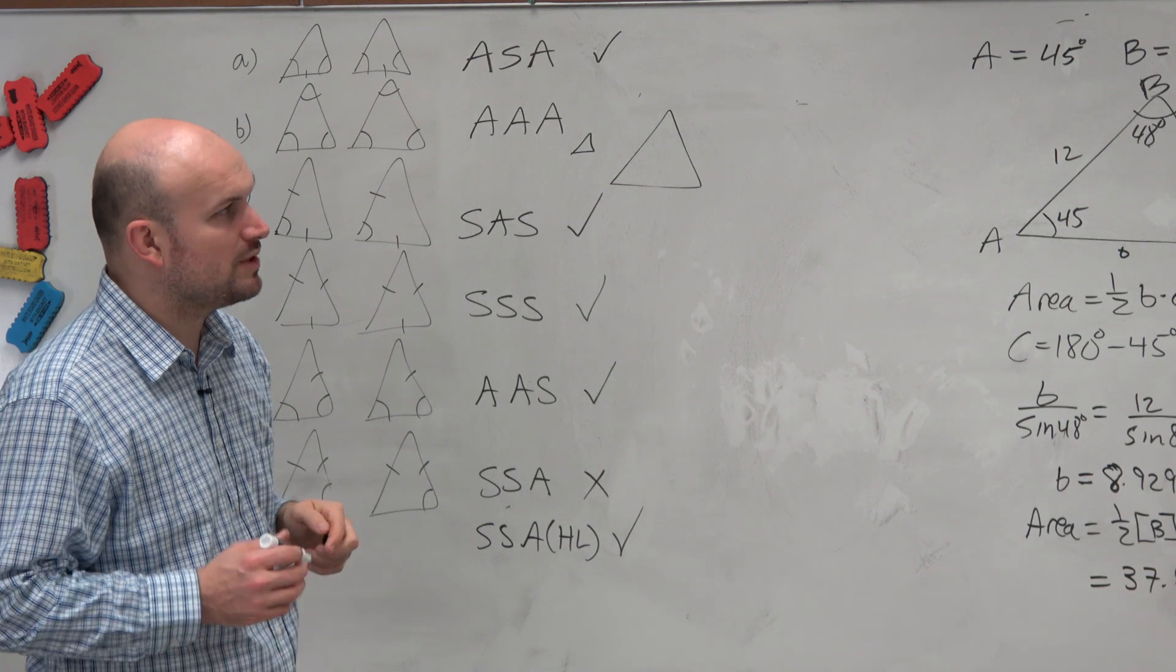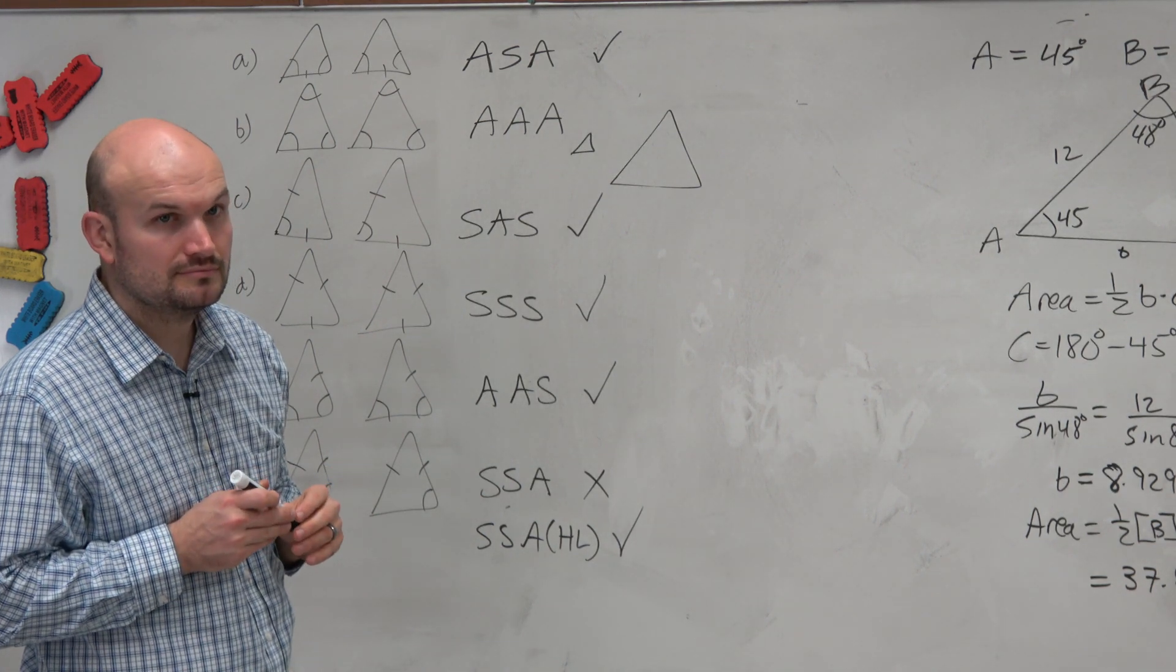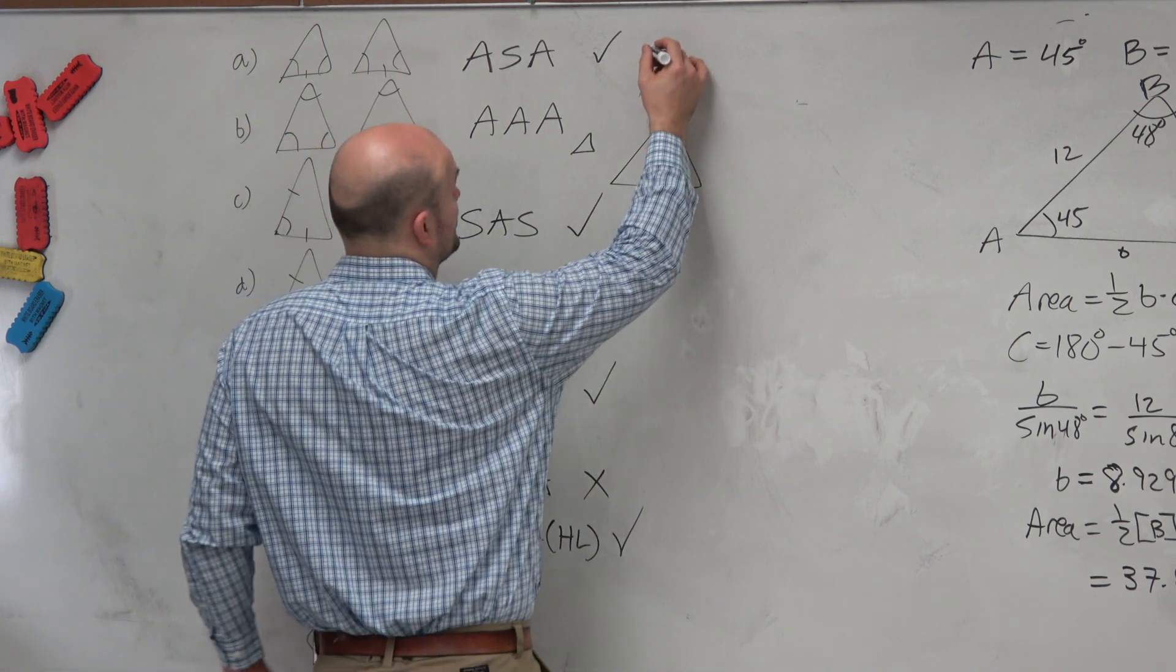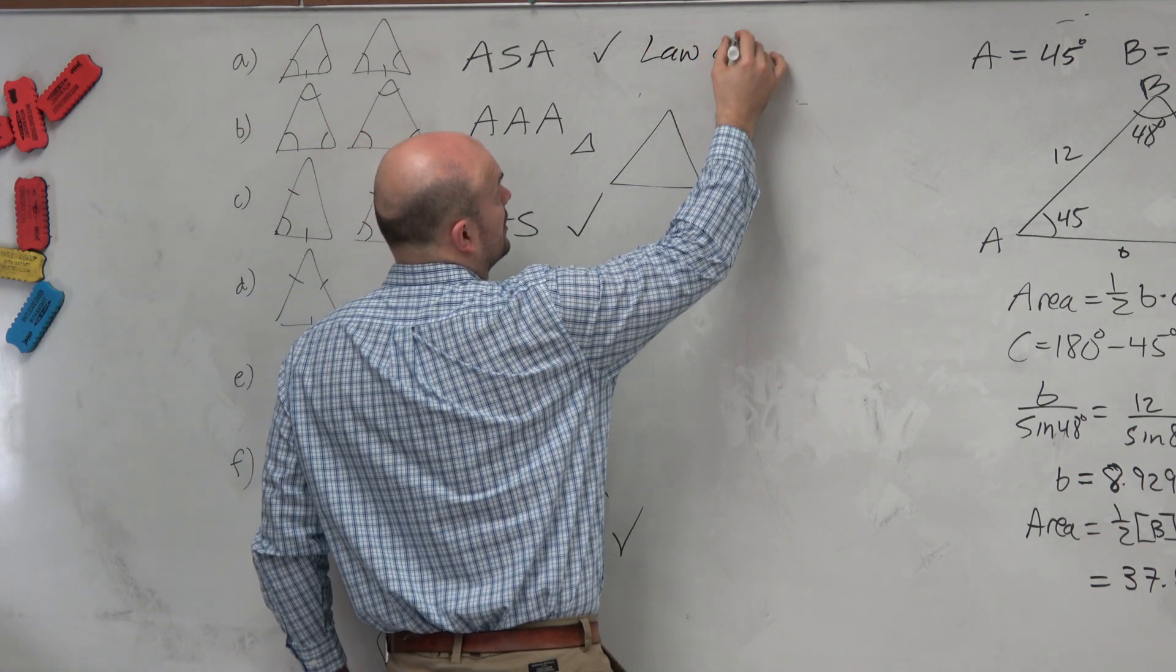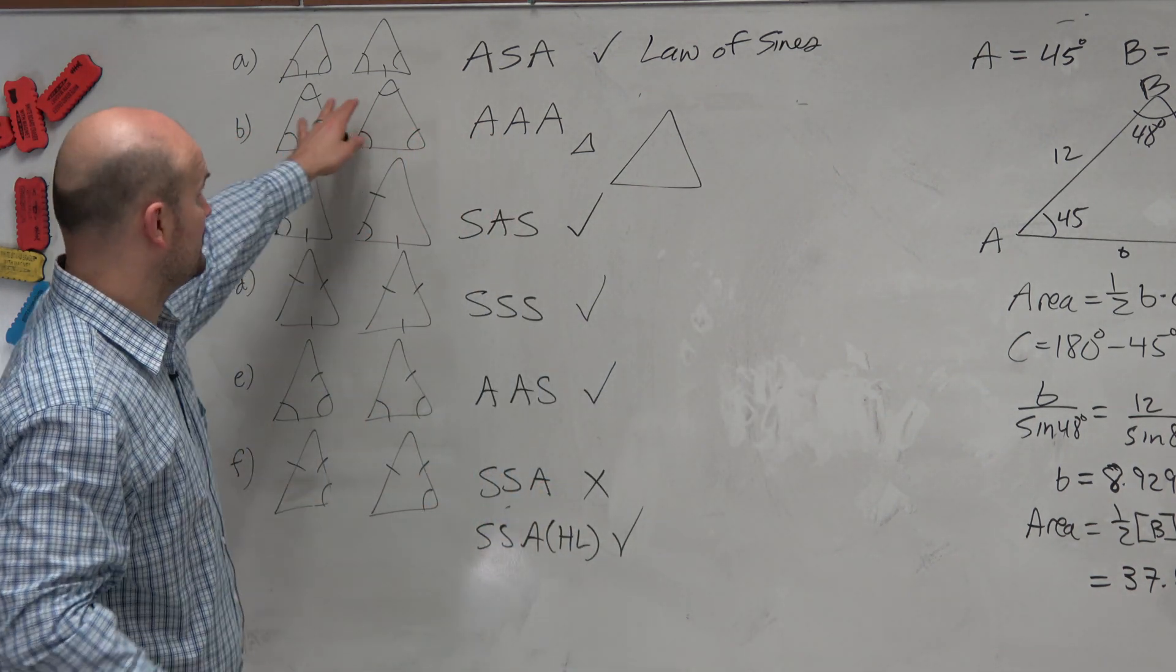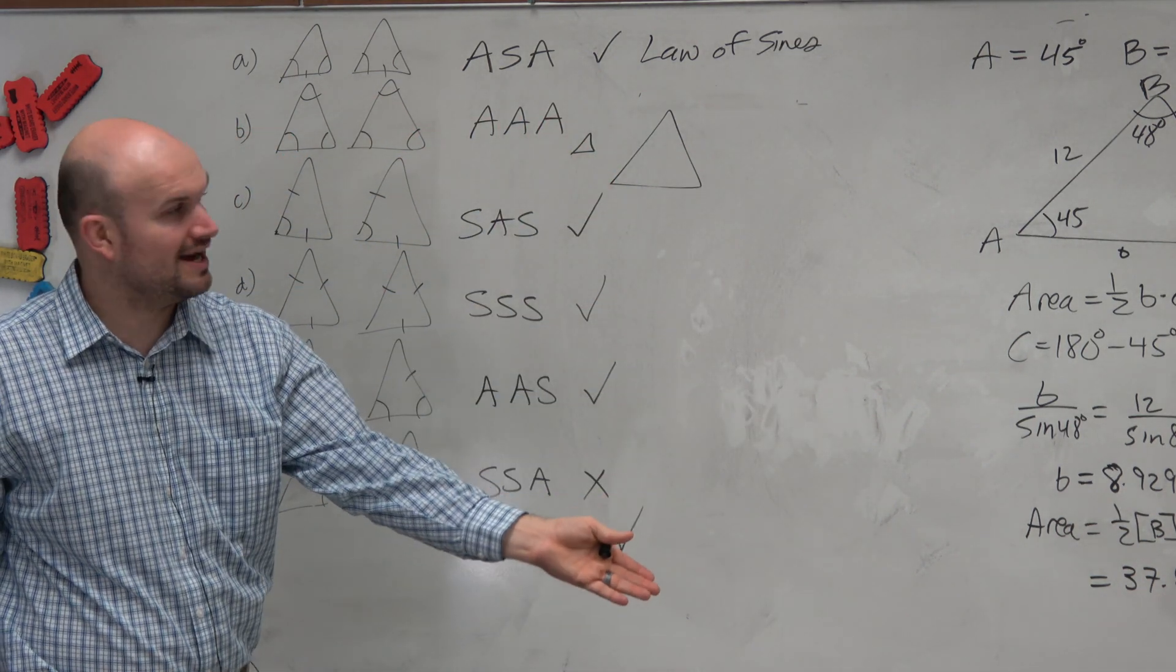The first example I gave you guys was what type of triangle? Angle, side, angle. So you guys know that that is a law of sines type of problem. So if you have a triangle, like with this, you apply the law of sines. And we worked it out perfectly fine.